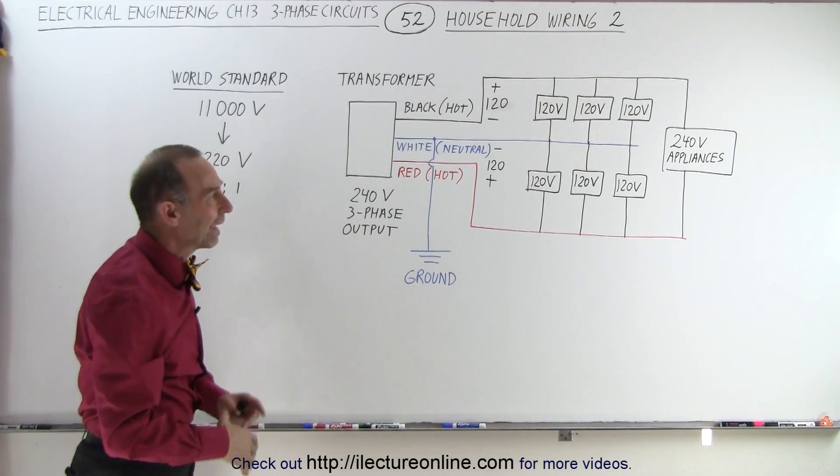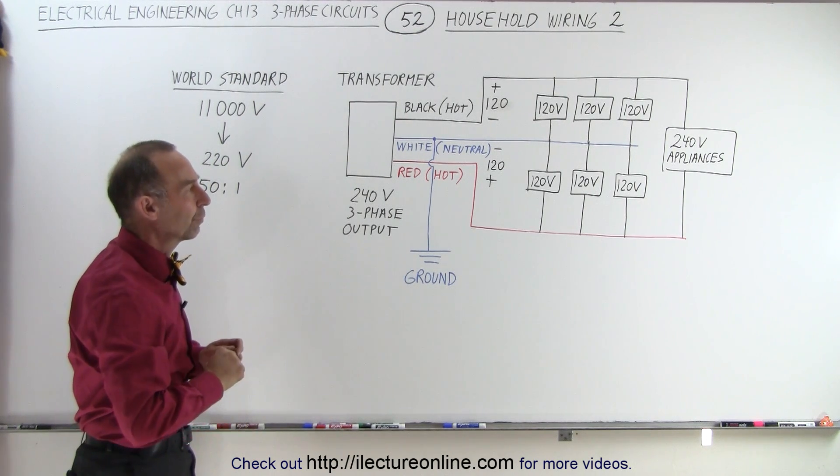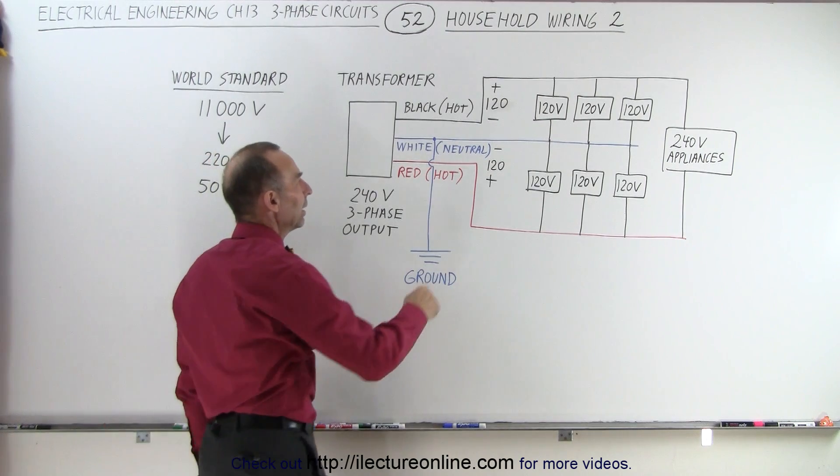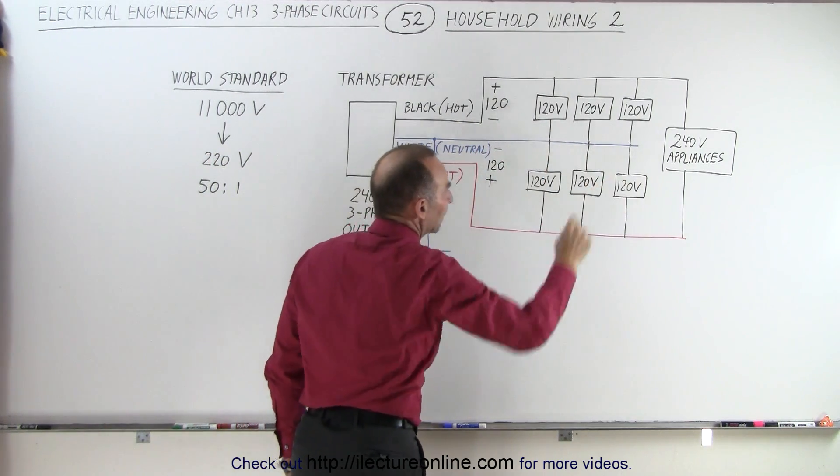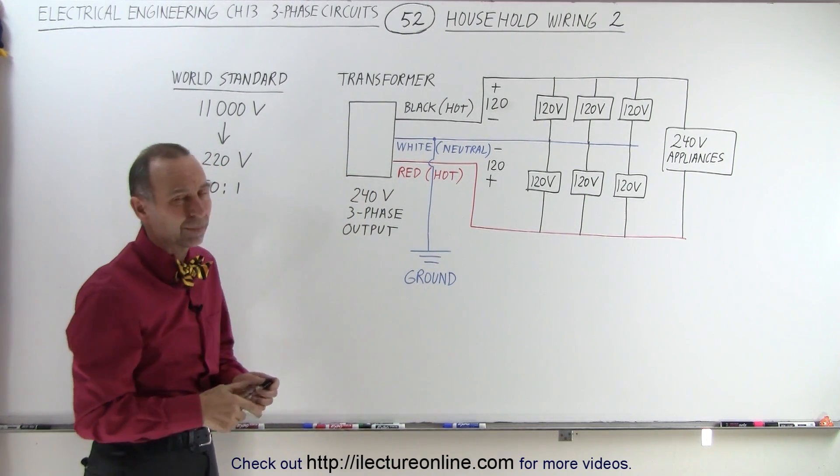Of course in all cases every appliance is grounded so there'll be a grounding wire to the 240 volt appliance as well. And typically the neutral wire is then connected somehow to ground and there's different places typically in the house where you have ground connections as well to make sure that there's a safety mechanism.